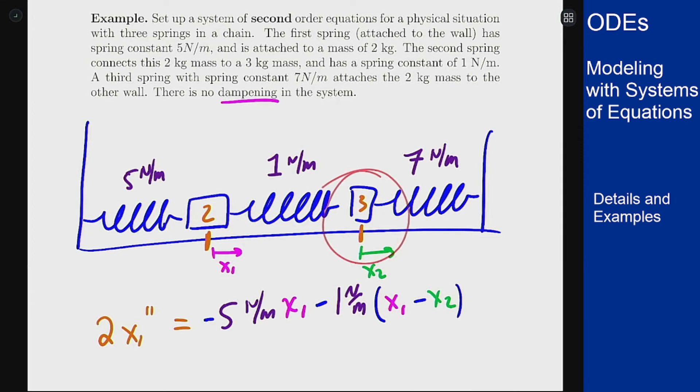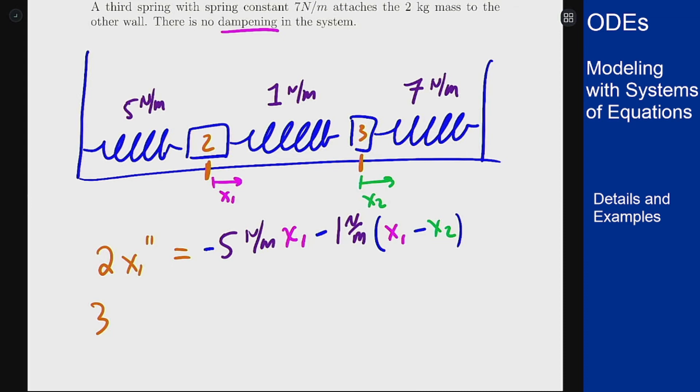We can do a similar thing for the three kilogram mass. For that I will get something like 3 x2 double prime equaling, now for the end spring here, the 7 newtons per meter spring, the setup is still the same. It's still going to be a negative 7 newtons per meter times x2. Why is that? Well, if x2 is positive this spring wants to make it negative, it wants to make it go back to zero. The acceleration is always opposed to the position whether that be positive or negative. It just means that now x2 being positive is a compression not an extension, but it works out the same way. And then we have the middle term again for this middle spring which has 1 newton per meter on it. x1 minus x2 gives me the compression in the spring, but in this case the compression of this spring wants to make x2 be positive because that will lessen the compression, so I will get a plus sign in here instead of a minus sign.